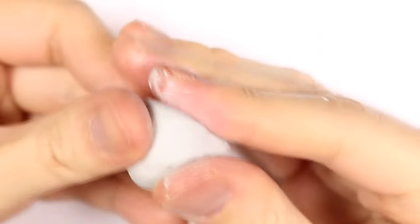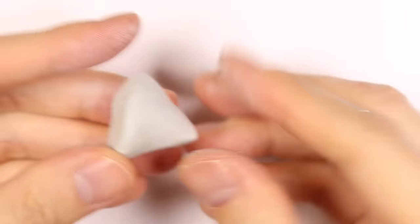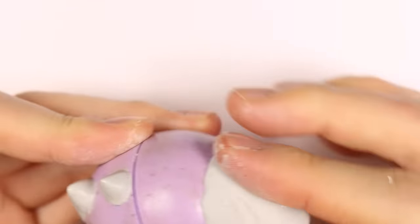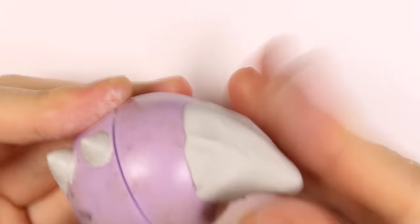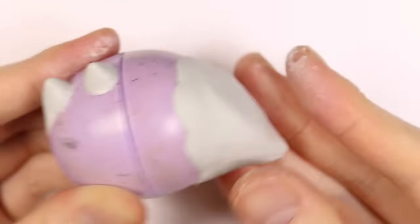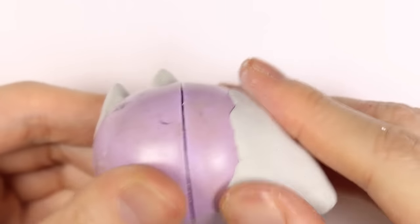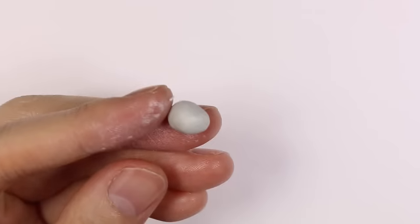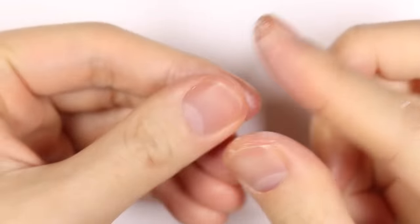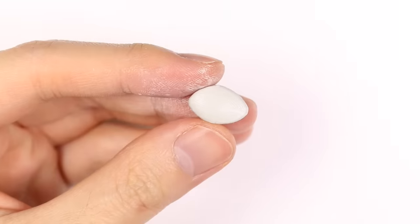Next we're going to make the mermaid tail, so I'm taking a huge chunk of clay and rolling it into a cone shape. I'm going to add that to the EOS. For the fin, you want to just pinch some clay into a diamond shape and add that to your tail.